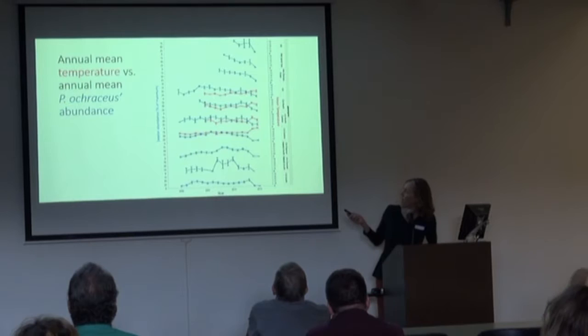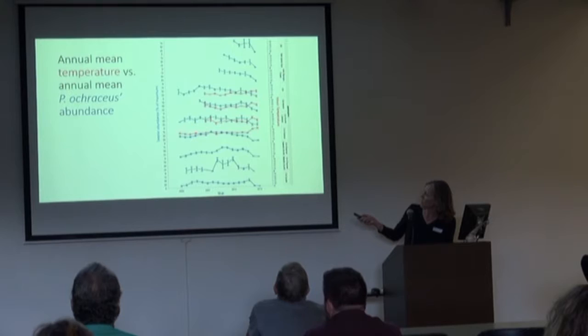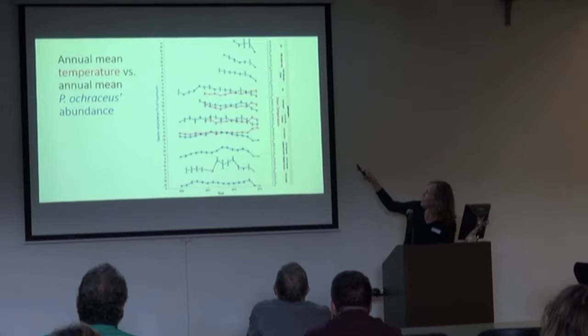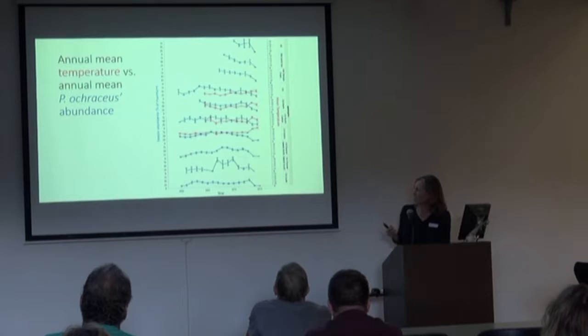We have temperature loggers in the intertidal at many of our sites. The temperature data is shown here with the red lines. The blue lines are our Pisaster abundance data over time. And again, this is going from Alaska, Washington sites, Oregon, Northern California, Central California, and then down into Southern California. And we started out looking at this very general pattern.